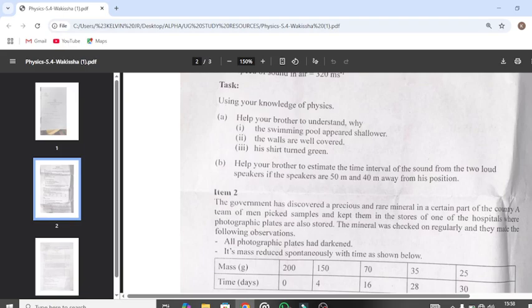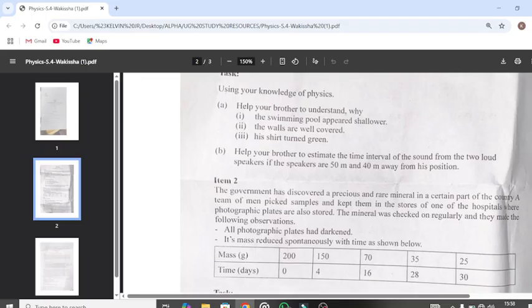Part B of the item says help your brother to estimate the time interval of the sound from the two loudspeakers if the speakers are 50 meters and 40 meters away from each other. Those were from Item 1.